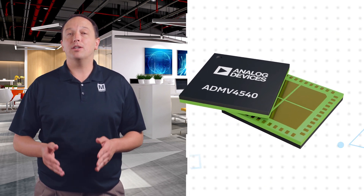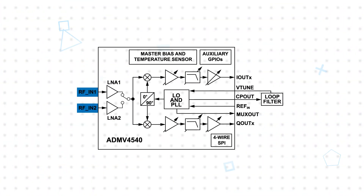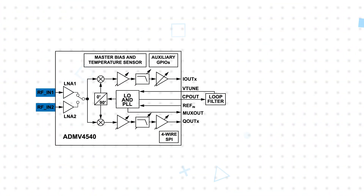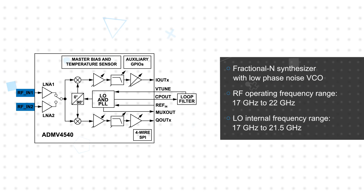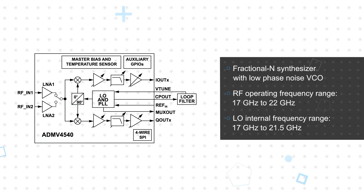The Analog Devices ADMV4540 is a highly integrated quadrature demodulator ideally suited for next-generation high-throughput satellite communications. It features two RF inputs that can be selected via SPI, with separate low noise amplifiers to support antenna polarization. It also has an integrated fractional N PLL and a low phase noise VCO to generate the on-chip local oscillator for the double-balanced IQ mixers.